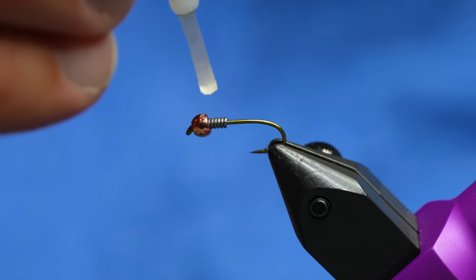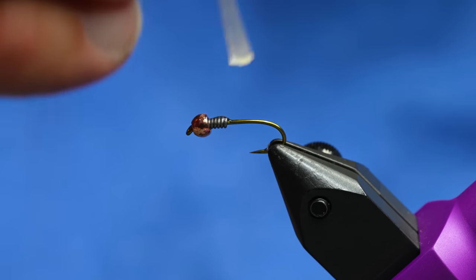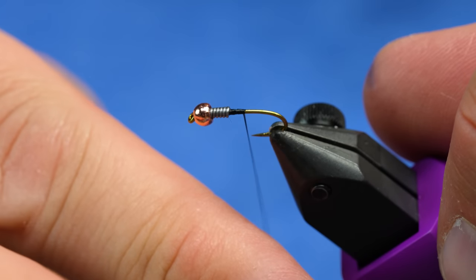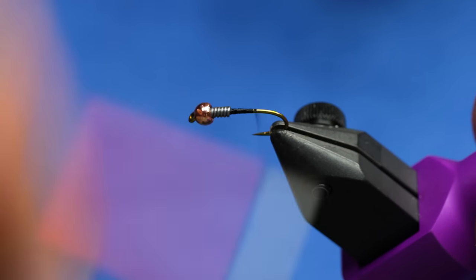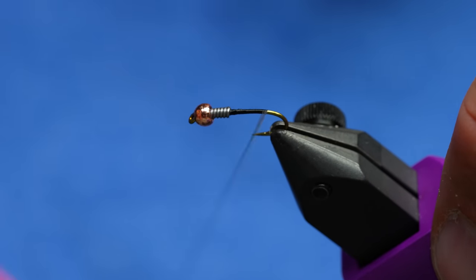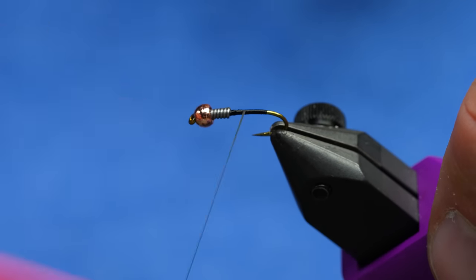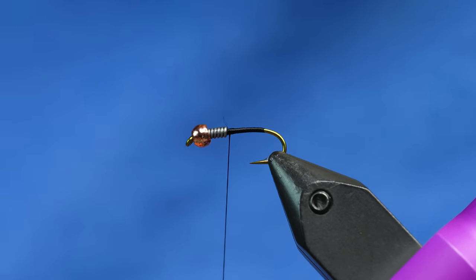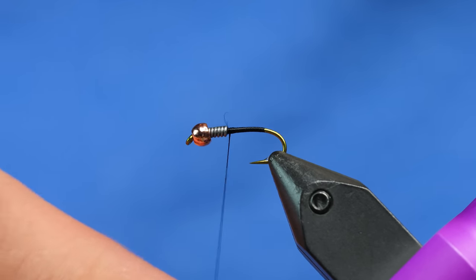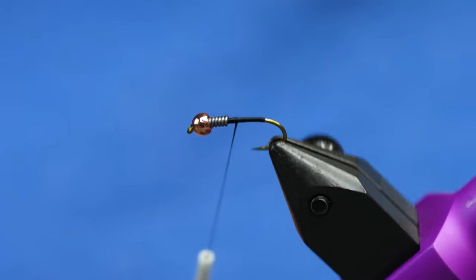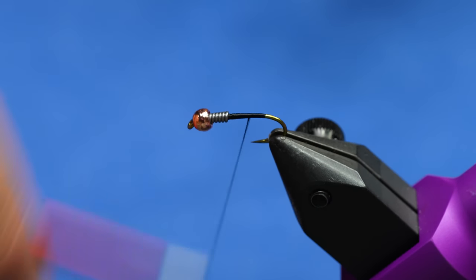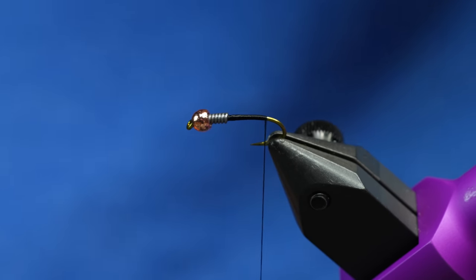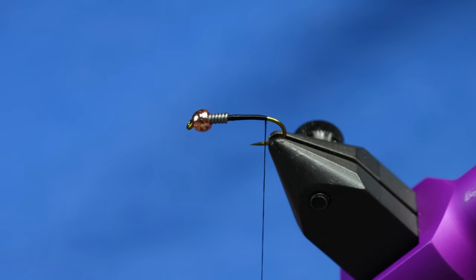We've got quite a wing case on this bad boy, so we need to make sure it stays nice and centered. This is 70 denier UTC that I'm using. I use it because it's really, really flat. It just doesn't have any bumps to it. But it's really important that this body remains flat. You can use this thread, Danville's 70 grade. You could even do it with Uni if you kept unwinding your thread.